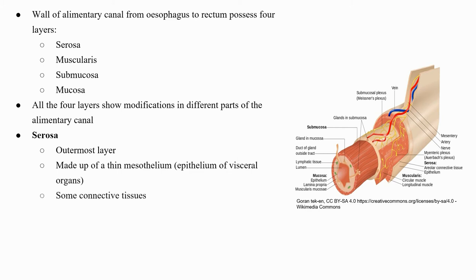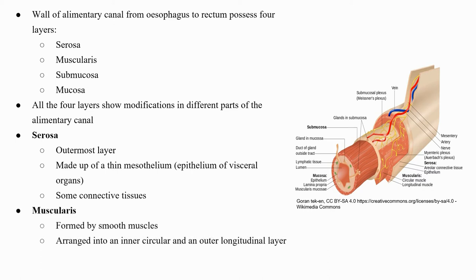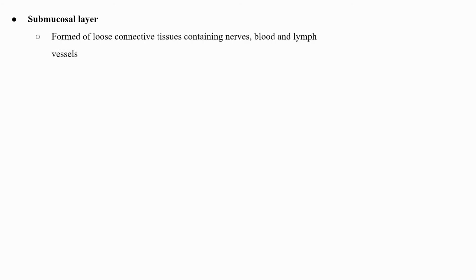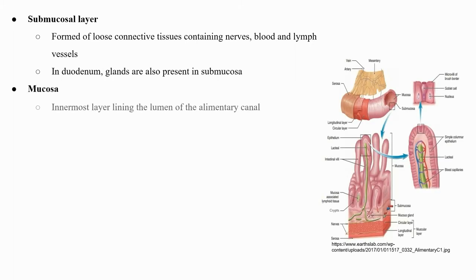Serosa is the outermost layer, made up of a thin mesothelium (the epithelium of visceral organs) with some connective tissues. Muscularis is formed by smooth muscles usually arranged into an inner circular and an outer longitudinal layer; an oblique muscle layer may be present in some regions. Submucosa is formed of loose connective tissues containing nerves, blood and lymph vessels; in the duodenum, glands are also present in the submucosa.